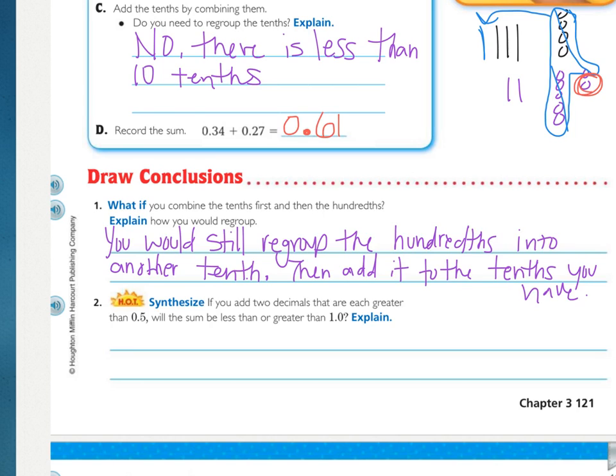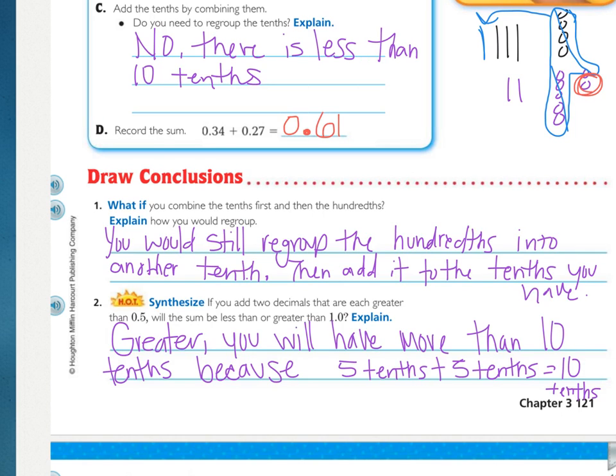Number two, if you add two decimals that are each greater than 5 tenths, will the sum be less than or greater than 1? Explain. I want you to start by saying less than or greater, which one is it, and then tell me why. The sum will be greater than 1. Now, explain why it will be greater. I wrote greater, you will have more than 10 tenths because 5 tenths plus 5 tenths equals 10 tenths, and once you have 10 or more, you're regrouping.